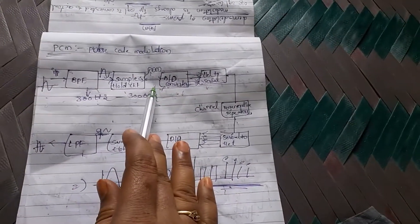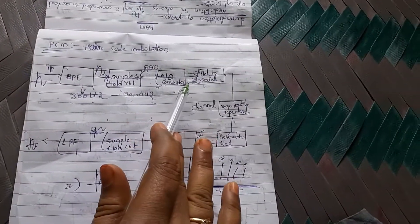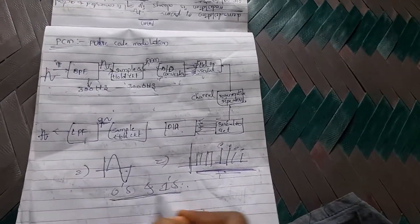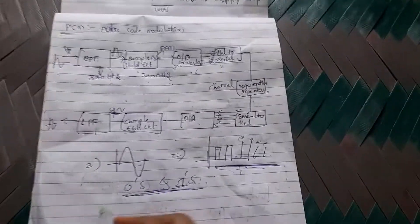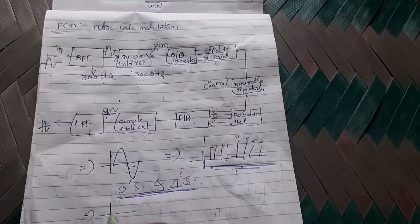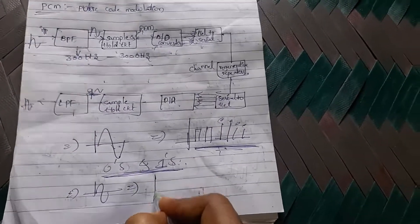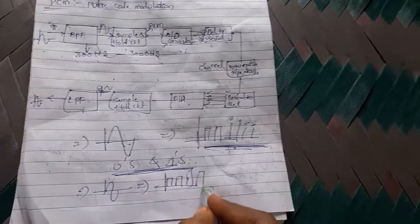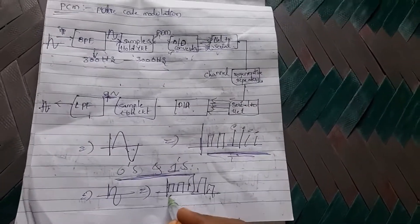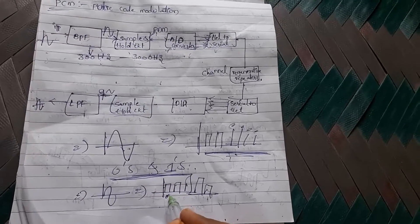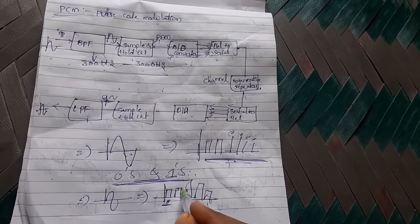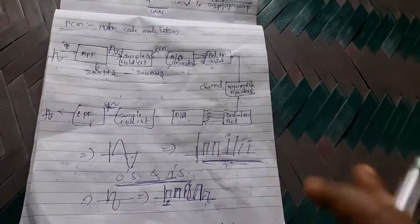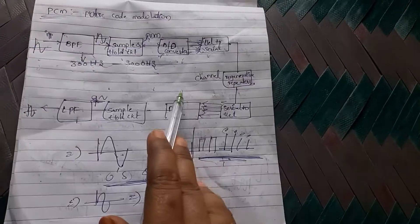The PAM signals are converted into parallel PAM signals in the form of zeros and ones. This is shown as boxes where the width and height are represented in binary format — that is, in parallel form.